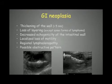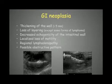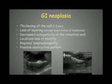Further examples show wall thickening greater than 5 mm and loss of layering. We can see a sharp transition where normal layering of the small intestine stops abruptly and a thickened lesion with no visible layering begins. There is also decreased echogenicity — these lesions are generally more hypoechoic — and localized loss of motility can be present.